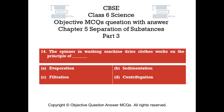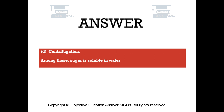Question number 14. The spinner in a washing machine that dries clothes works on the principle of. Option A: Evaporation. Option B: Sedimentation. Option C: Filtration. Option D: Centrifugation. The right answer is Option D — Centrifugation. The spinner in a washing machine dries clothes on the principle of centrifugation.